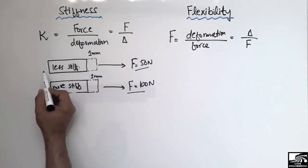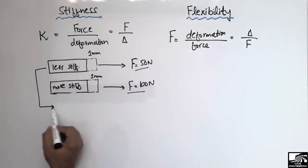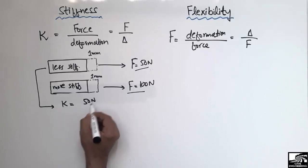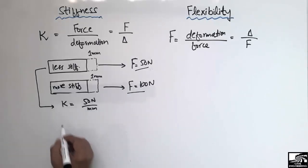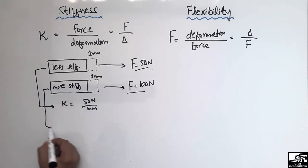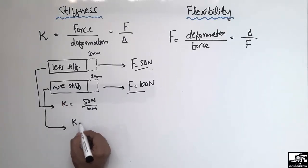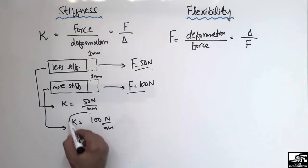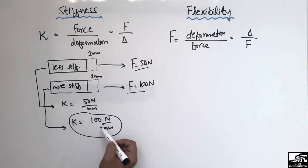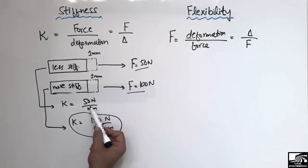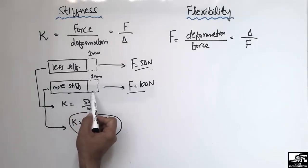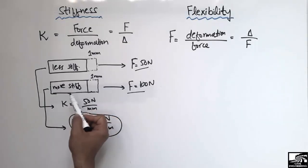So if we calculate the stiffness values: the stiffness of the less stiff material is 50 newton per millimeter, while the stiffness of the stiffer material is 100 newton per millimeter. We can clearly see that 100 newton per millimeter is higher than 50 newton per millimeter, so more force is required to produce a unit deformation — that is the stiffer material.